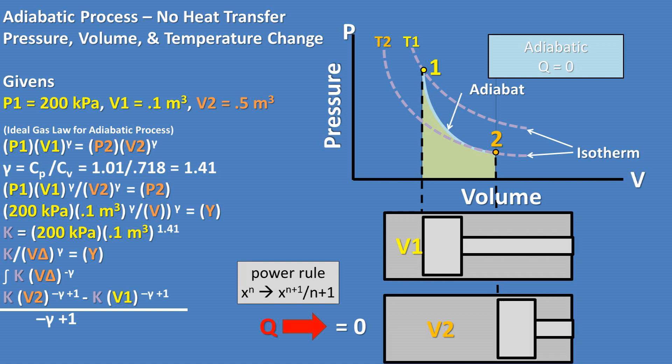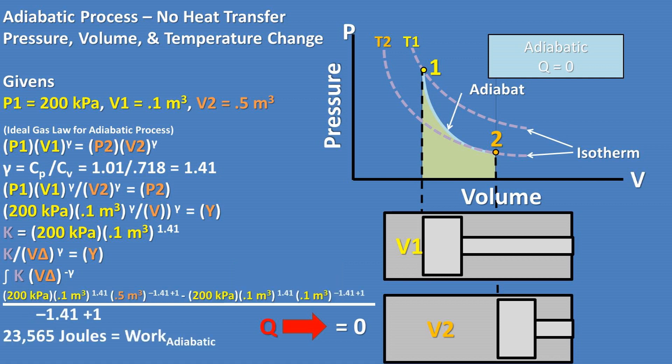Using the power rule in calculus, which basically is where you add 1 to the power, then divide by the new power value. We get this expression, plugging in our k value and our volume 1 and volume 2 into this equation, we get the previous work value of 23,565 joules of work. So it's the same equation as before, it's just not as condensed.